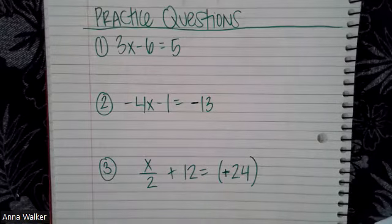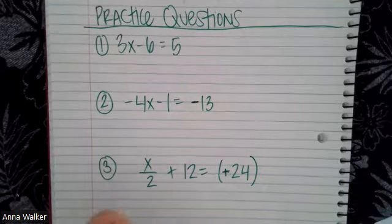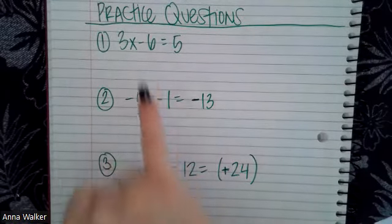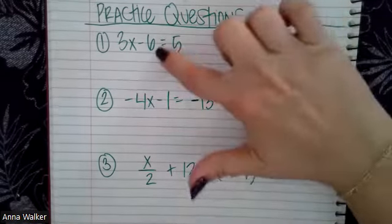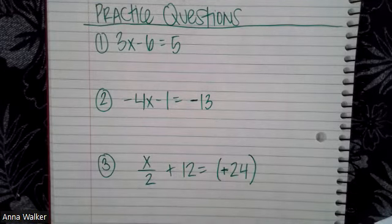Make sure you're looking at what is happening and using the correct property of equality — use the inverse operation. In all the examples we did, we used the subtraction property of equality to start. In these practice problems you'll notice you may have to use the addition property of equality, because that is the inverse operation to subtraction. Try these out, check your answer in the table of contents, feel free to ask your teacher any questions, and talk to you soon.